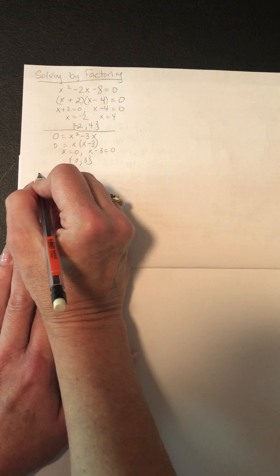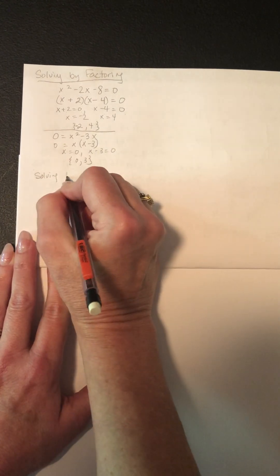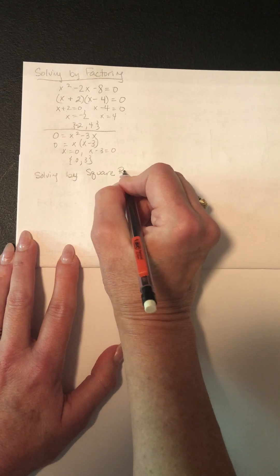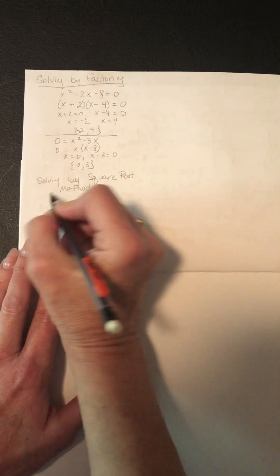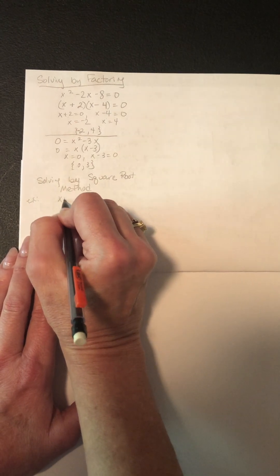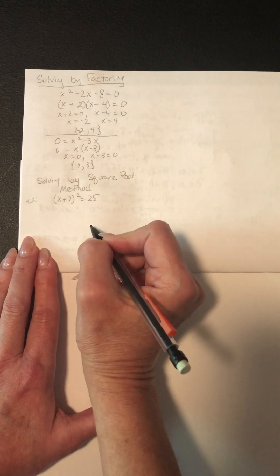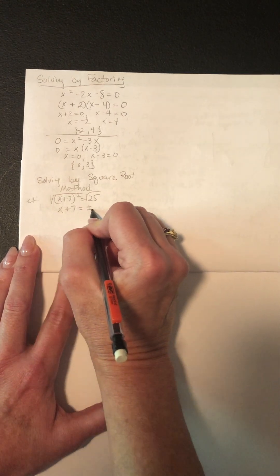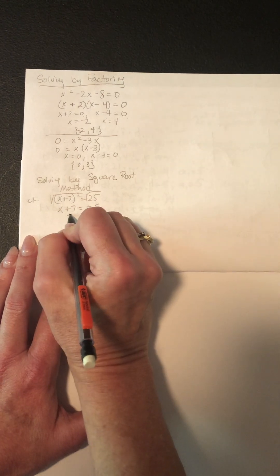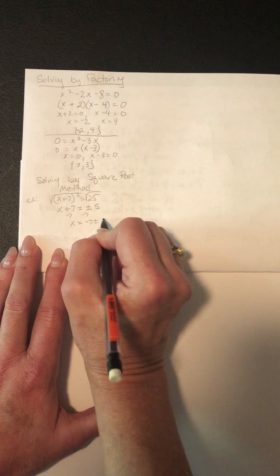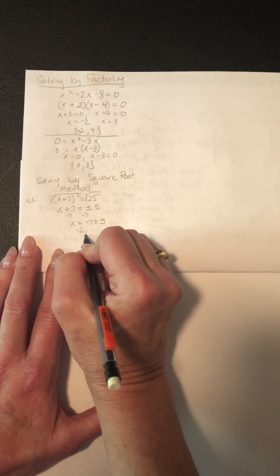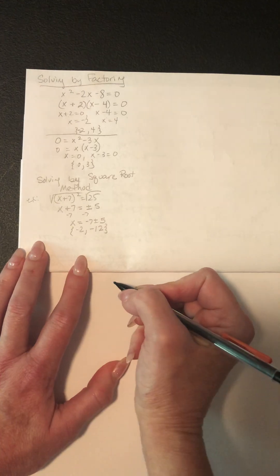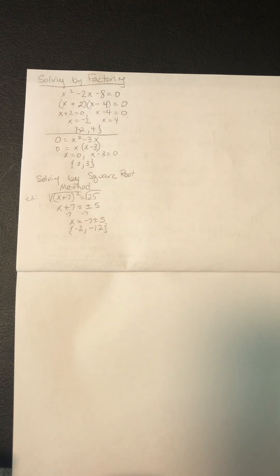Next is solving by the square root method. You can only use it when the expression is square-rootable or when b equals 0. For example, if (x plus 7) squared equals 25, square root both sides to get x plus 7 equals plus or minus 5. Then subtract 7: x equals negative 7 plus or minus 5, giving negative 2 and negative 12.